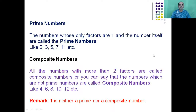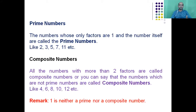We have discussed even and odd numbers, which are classified based on what digit is at the unit place. Now we will discuss another classification — prime numbers and composite numbers.